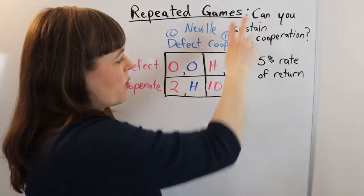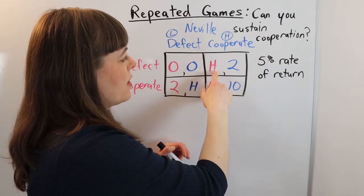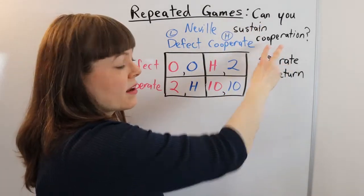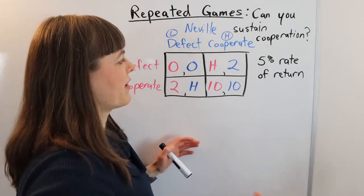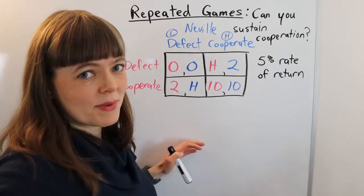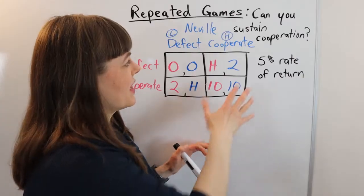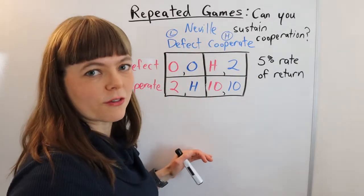And we don't know what that is. We're actually going to think through for what values of H would you sustain cooperation? And for what values of H would you still not be able to sustain cooperation, even if you're repeating this game over and over and over?